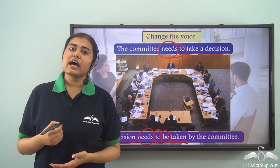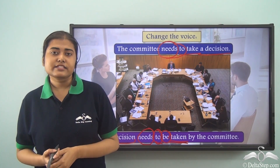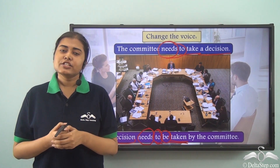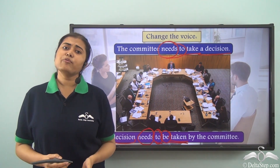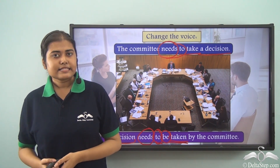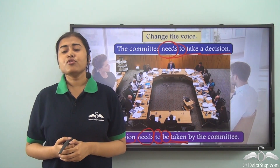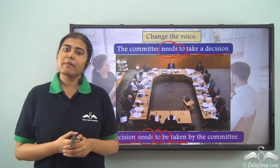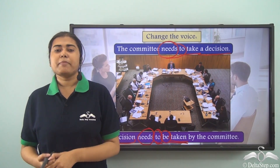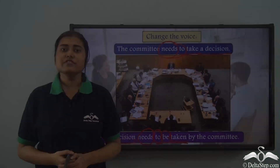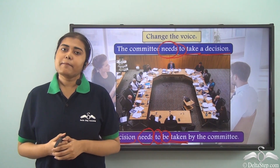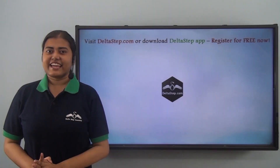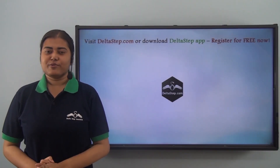So today we have seen how to identify whether a sentence is in the active or passive voice just by looking at the verb, and how to change the voice of a sentence. Now that you know all the rules of transformation from active to passive and from passive to active, you can take up as many examples as possible and practice.